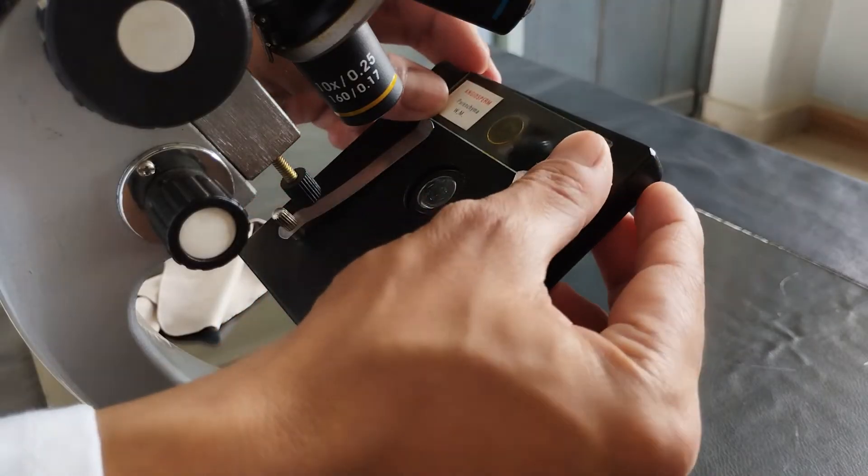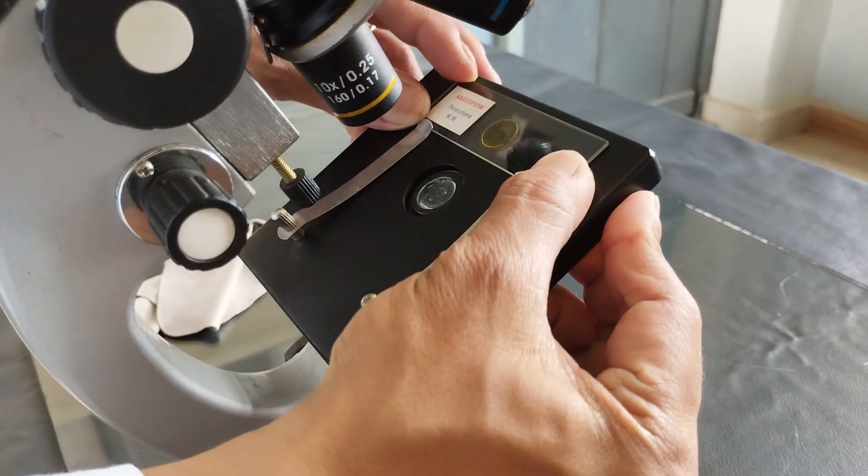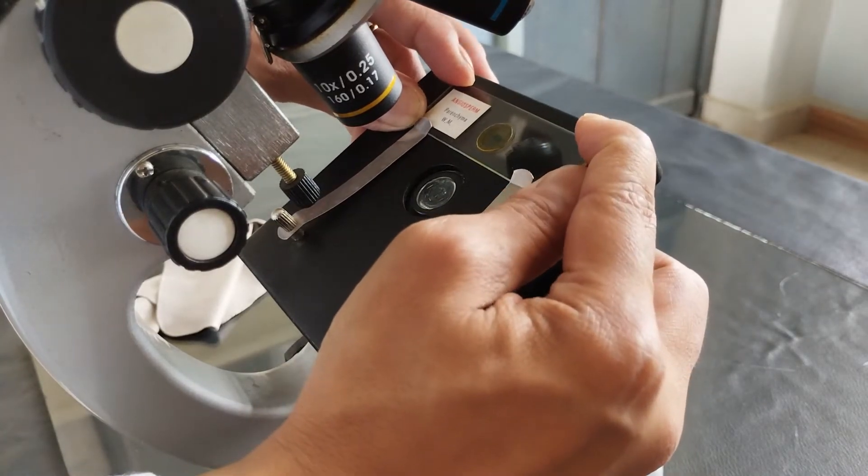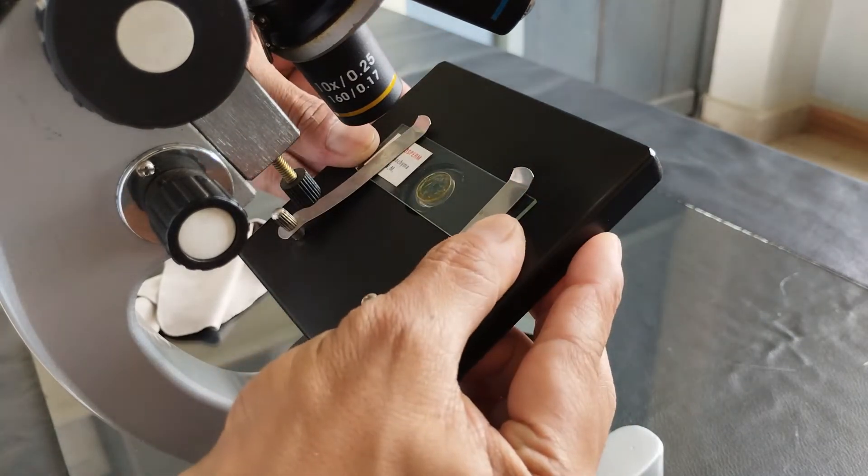Now, place the prepared slide containing the specimen of interest onto the stage. If the stage is of a simple construction with two spring clips, simply slide the glass slide from the terminal ends of the clips like so.